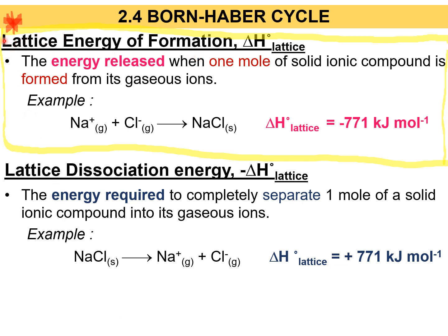Lattice energy of formation, or lattice energy, is the energy released when one mol of a solid ionic compound is formed from its gaseous ions. You know it is a solid ionic compound because the bond formed between Na and Cl is an ionic bond — an electrostatic force between a negatively charged ion and a positively charged ion. Since energy is released, the enthalpy of formation must be negative.